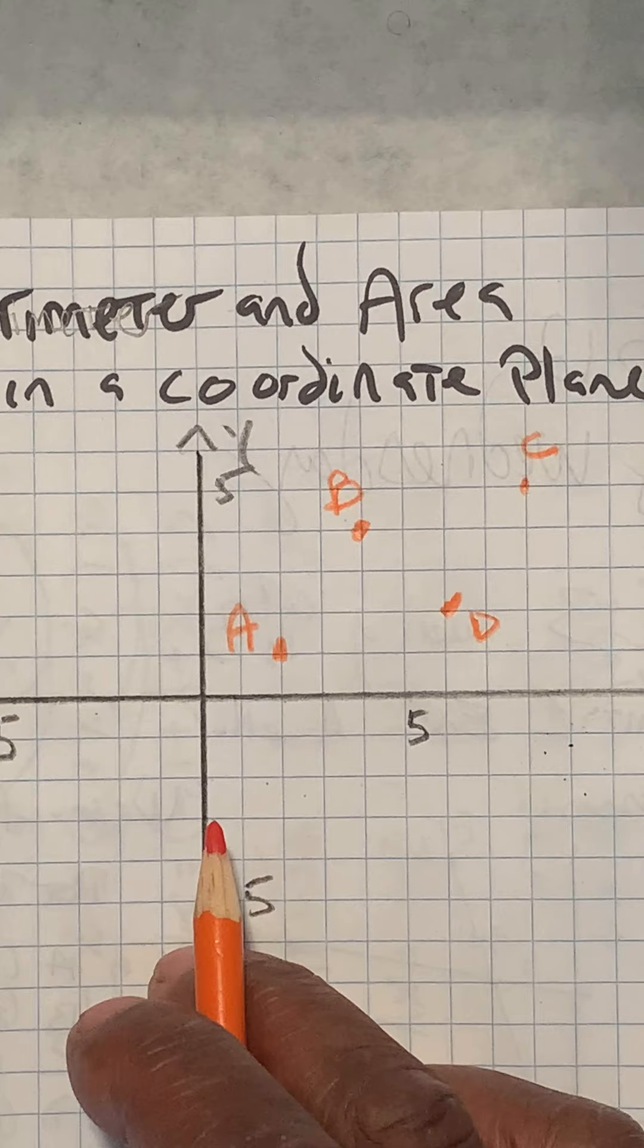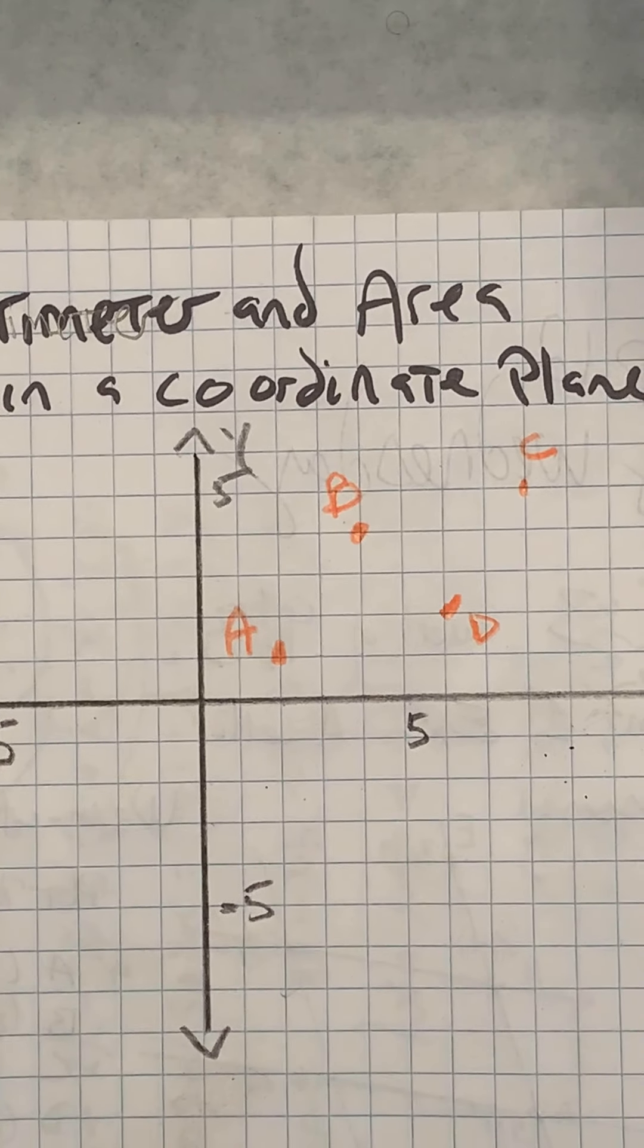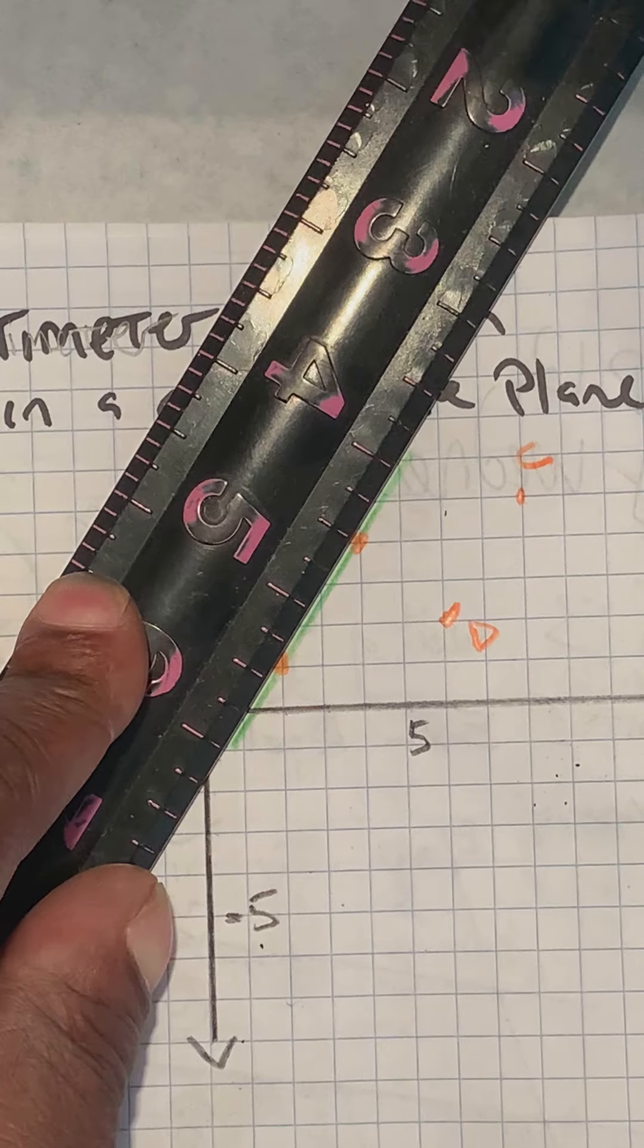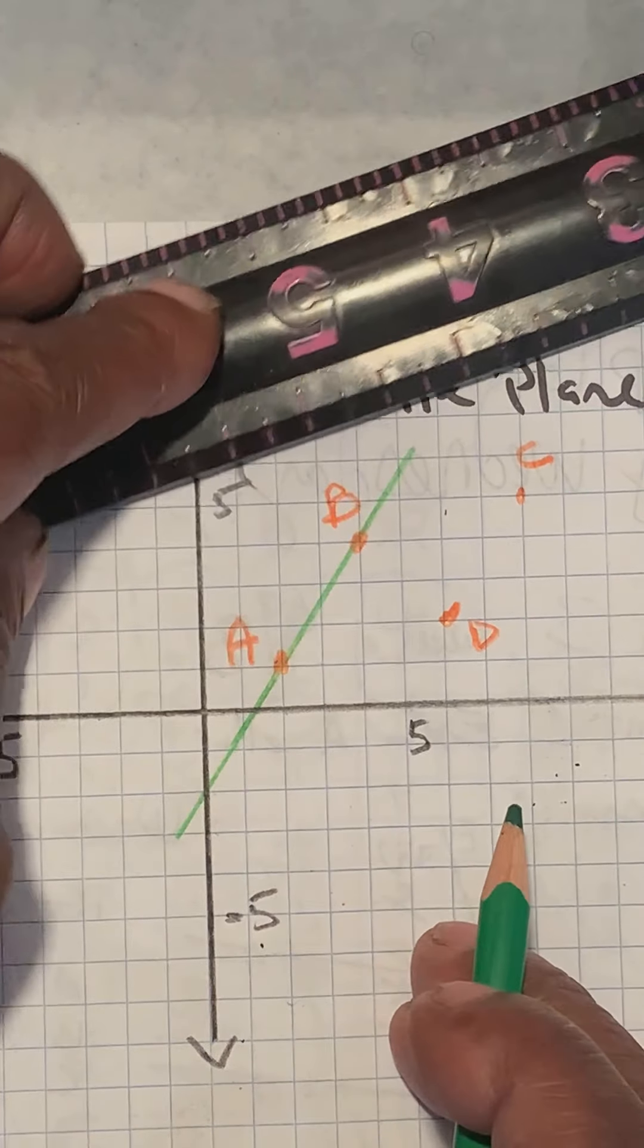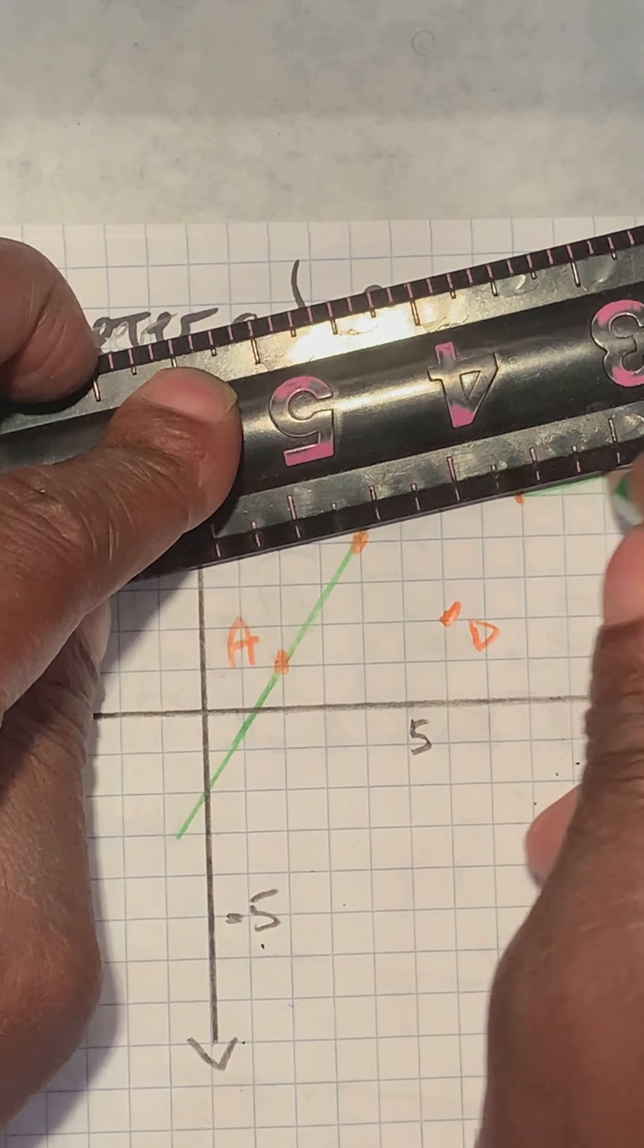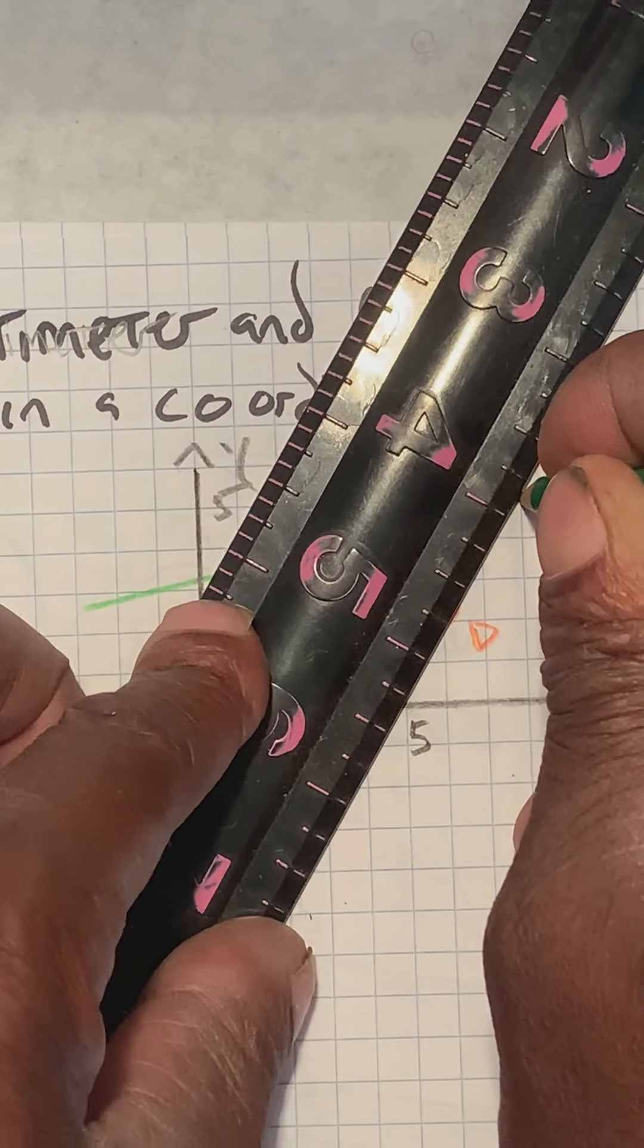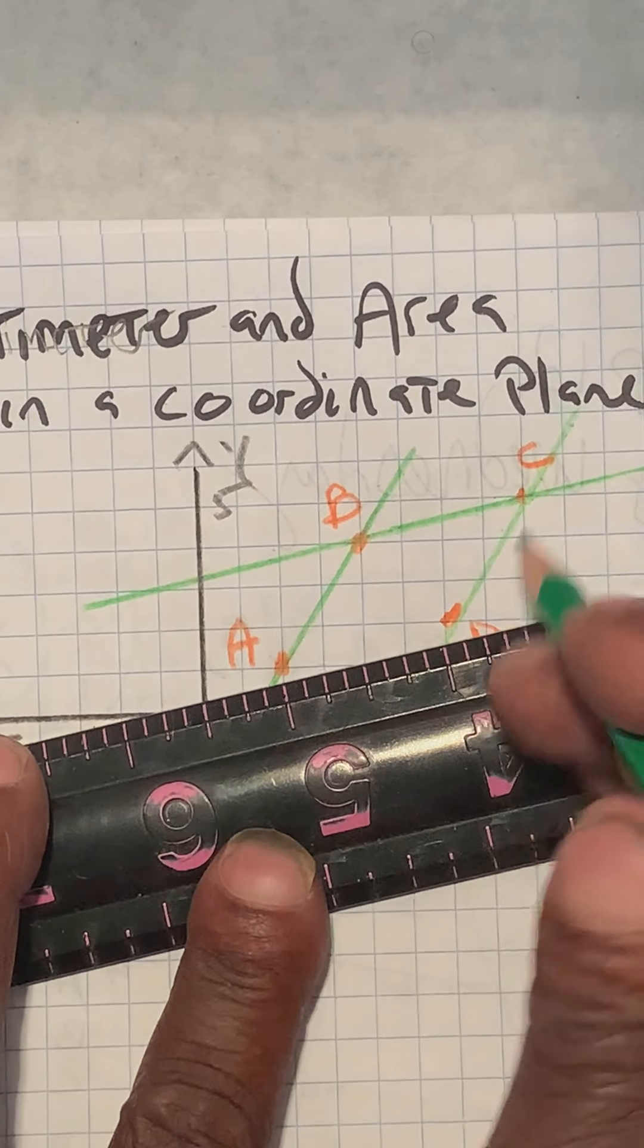We're going to take those four points and connect them together to create a quadrilateral. And when I connect, I always connect beyond the points. I don't just stop where the points are. A to B, B to C, C to D, and D back to A.